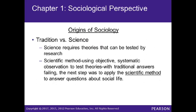The origin of sociology involves tradition versus science. Science requires theories that can be tested by research using objective, systematic observation. As traditional answers began failing, the next step was to apply the scientific method to answer questions about social life.